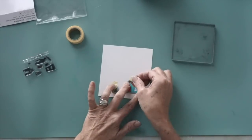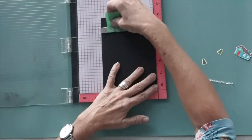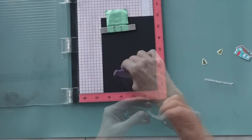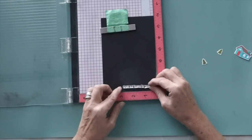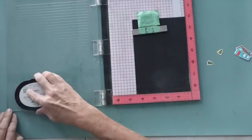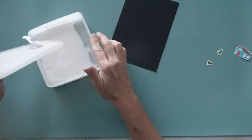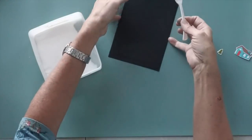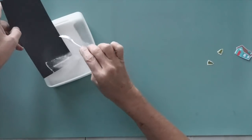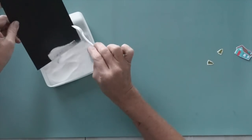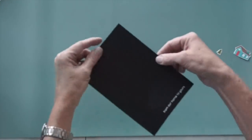Next I stamped the sentiment from the little stamp set that says from our home to yours on to black cardstock using Altenew embossing ink. I used white embossing powder and heat embossed it and then I cut it into a little narrow strip.